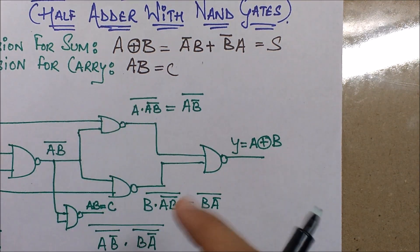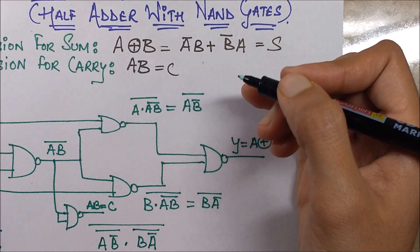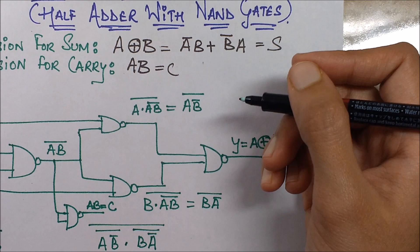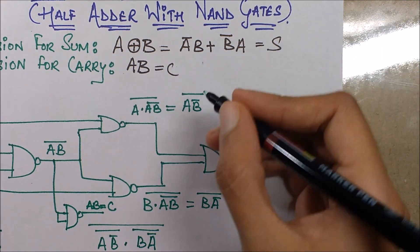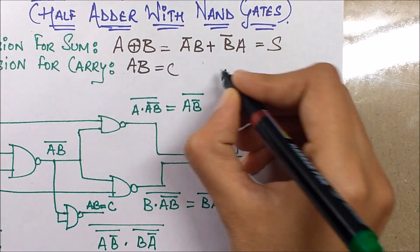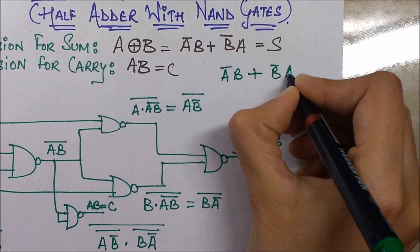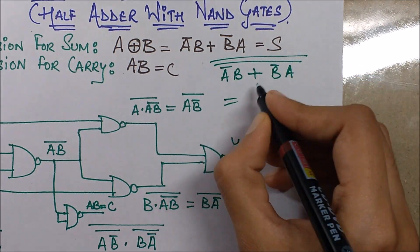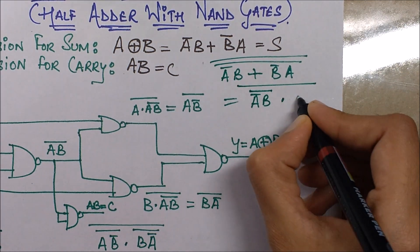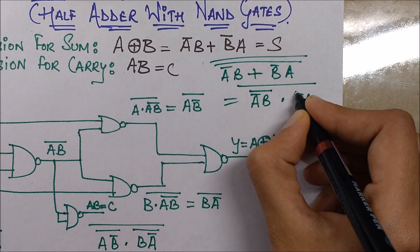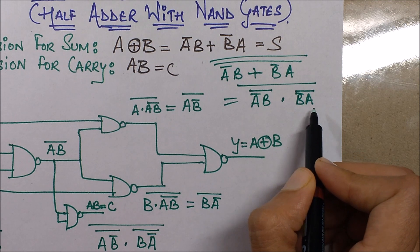That is why AB bar is required. Also, applying the previous logic of forming such things, I apply a double negation onto my expression which I need to realize as a circuit. So applying a double negation here and solving the inner one, what I get is the NOT of the first input dot the NOT of the second input.